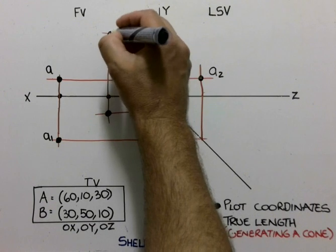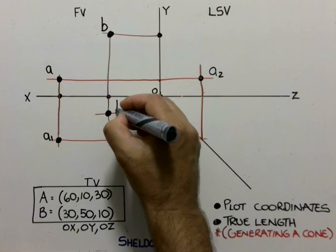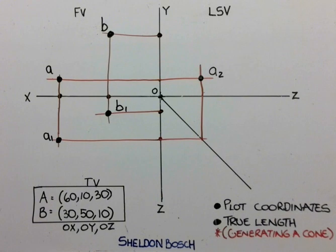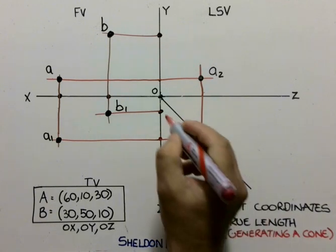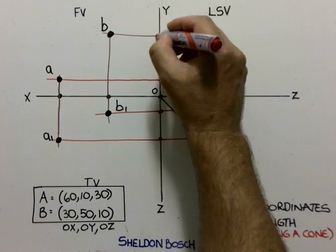And those are going to give me the two intersection points for B in my front view and in my top view. So I'm going to project that up and across.